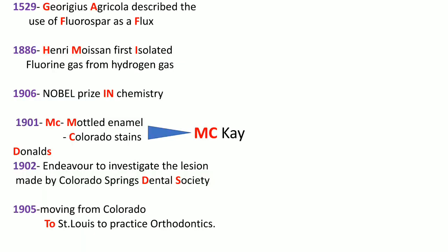So let us discuss all the events in brief. Since it is in chronological order, first in 1529, 'Gauf' stands for Giorgius Agricola, who described the use of fluorospar as a flux. In 1886, 'him' stands for Henry Moisson, who first isolated fluorine gas from hydrogen gas. So: Gauf dio him lay in McDonald's.